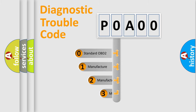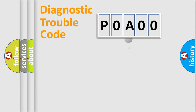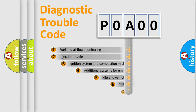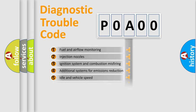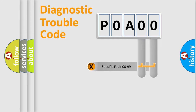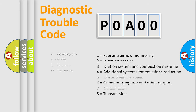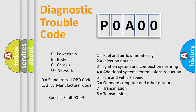If the second character is expressed as zero, it is a standardized error. In the case of numbers 1, 2, or 3, it is a manufacturer-specific error expression. The third character specifies a subset of errors. This distribution is valid only for the standardized DTC code. Only the last two characters define the specific fault of the group, and this division is valid only if the second character code is expressed by the number zero.